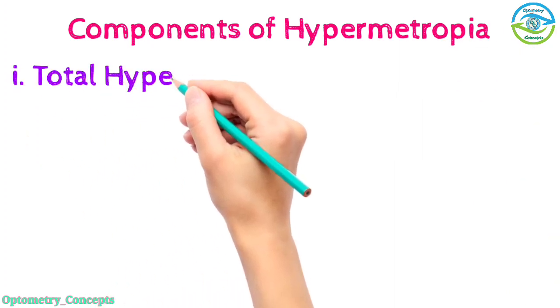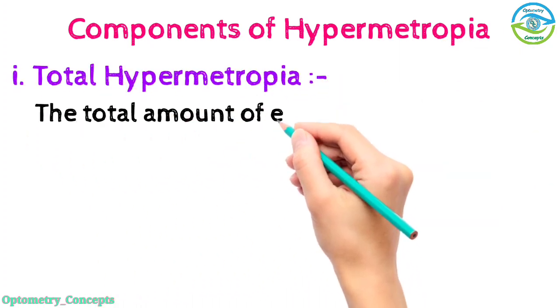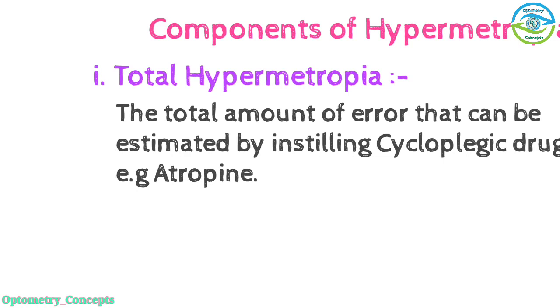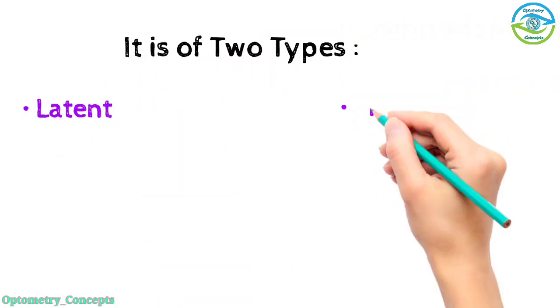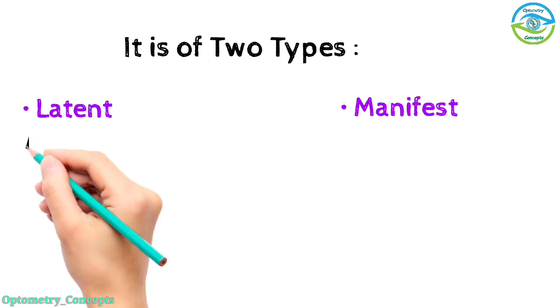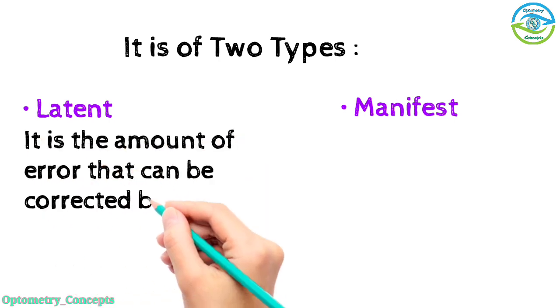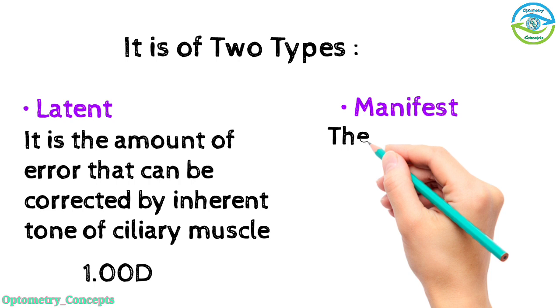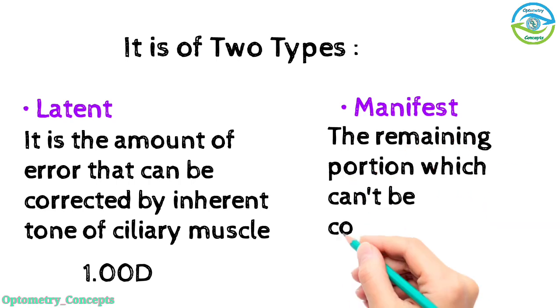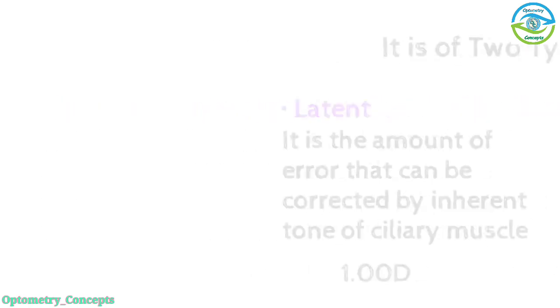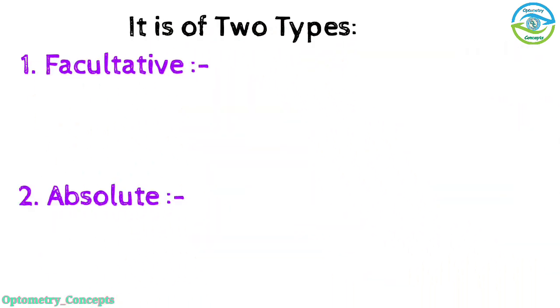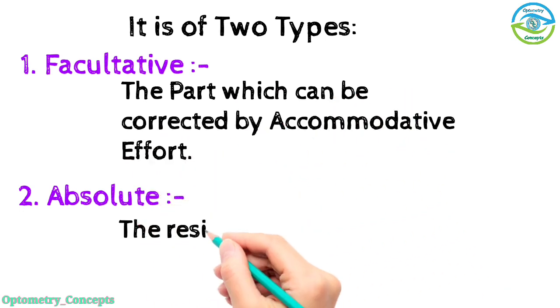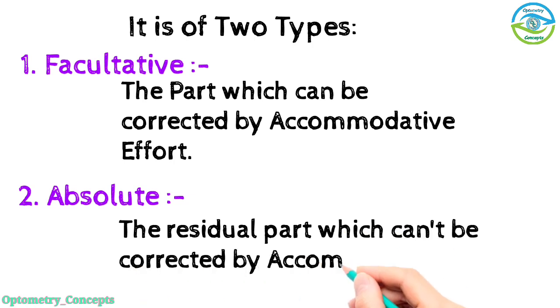Components of hypermetropia: total hypermetropia is the total amount of error that can be estimated by instilling cycloplegic drug, e.g. atropine. It is of two types: latent and manifest hypermetropia. Latent hypermetropia is the amount of error that can be corrected by inherent tone of ciliary muscle, which is about one diopter. In manifest hypermetropia, the remaining portion which cannot be corrected by ciliary tone. It is of two types: facultative and absolute. Facultative is the part which can be corrected by accommodative effort. Whereas absolute is the residual part which cannot be corrected by accommodative effort.